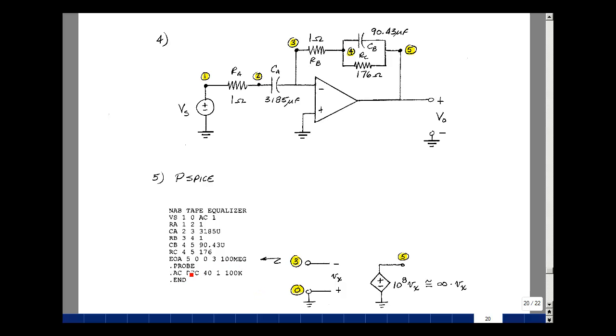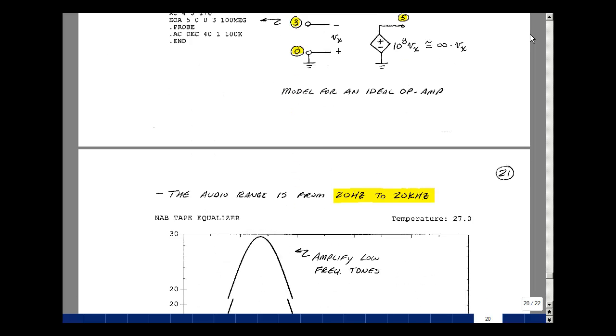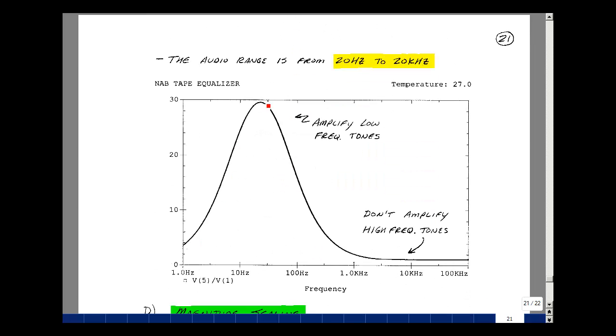Dot Pro will give us access to all the variables in our circuit. Let's do a plot from 1 hertz to 100 kilohertz, and do 40 points per decade, so we'll have about 200 points on the screen. You can see here that we're getting an increase in the gain at low frequencies and basically passing the signal at high frequencies, just the opposite of what was done in the recording process.